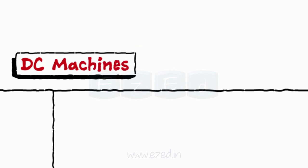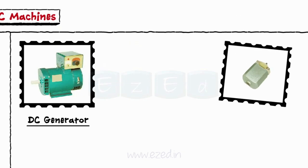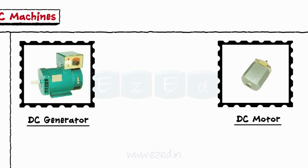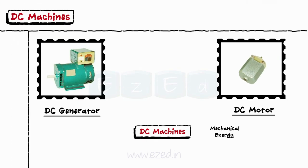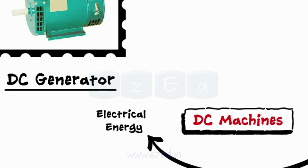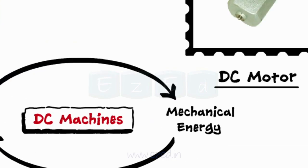In our day-to-day life, we come across many common terms such as generator, motor, etc. These devices are called DC machines. They either convert the mechanical energy into electrical or electrical energy into mechanical energy.